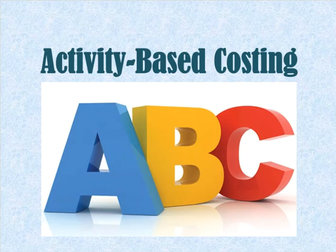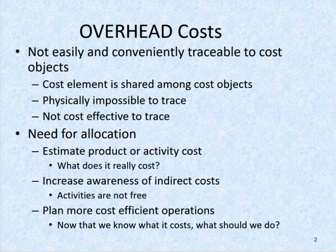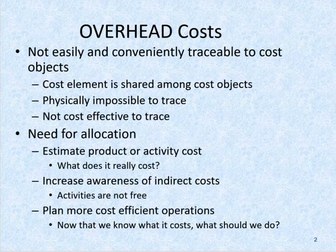Let's take a few minutes to talk about something called activity-based costing and why a company might use something like this. If you remember back from job order costing, we talked a lot about overhead costs. We have three primary components to our total manufacturing costs: direct materials, direct labor, and manufacturing overhead. Overhead exists because we have items that are not easily and conveniently traceable to specific cost objects or specific products.